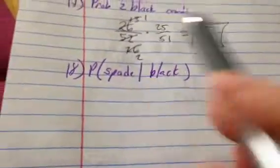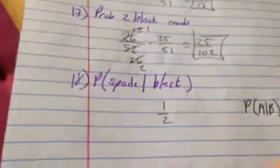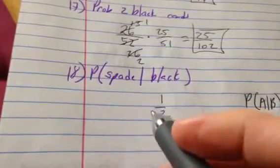You can just think of it like there's only spades and clubs that are black. 50-50 chance it's a spade. So that's your answer.